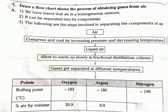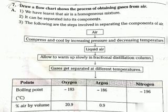The gases get separated at different heights. The gases obtained are oxygen, argon, and nitrogen. If we want oxygen gas from air, we have to separate out all other gases. The liquid air is allowed to warm up slowly in a fractional distillation column where the gases separate at different temperatures depending upon their boiling points.